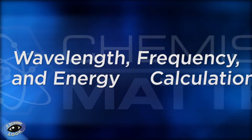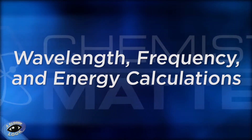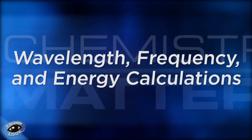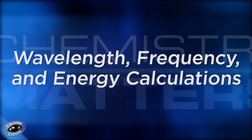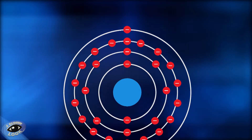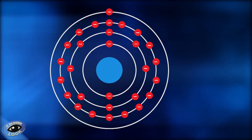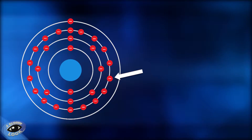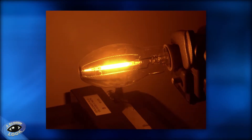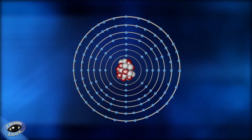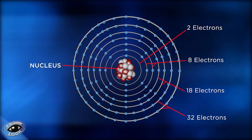In this closer look, we'll learn how to perform calculations involving wavelength, frequency, and energy. In Unit 3, we looked at atomic structure, including the subatomic particle of the electron. In this video, we'll investigate the nature of light and energy, which will help us to better understand the electron.